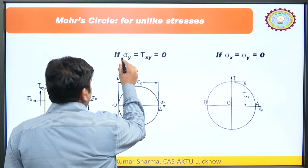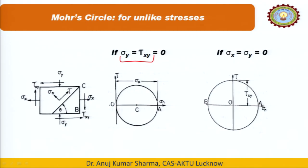There are some specific conditions. If sigma y and tau xy are zero, then sigma x alone remains, and the center becomes sigma x by 2, with the circle drawn accordingly. Similarly, if sigma x and sigma y are both zero, only tau xy remains, which becomes the main component — we take it as the center and use it as the radius to draw the specific Mohr circle.